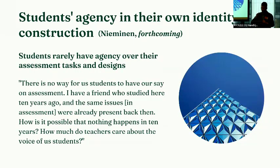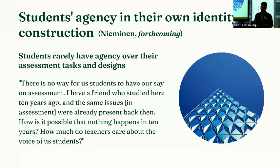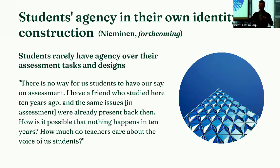I wanted to give a sneak peek of my upcoming work, going deeper by looking at narrative interview data on how students with disabilities construct their own identities in assessment. The key finding is that students really have a profound amount of agency over their own assessment tasks. Many students who participated in my interviews noted they came to the interview situation because they wanted to provoke some kind of change but had been unable to do so — they hoped that through the interview something would happen. One student noted there is no way for students to have a say on assessment, and had a friend who studied in the same program 10 years ago and faced the same issues. The student asked: how is it possible that nothing happens in 10 years?